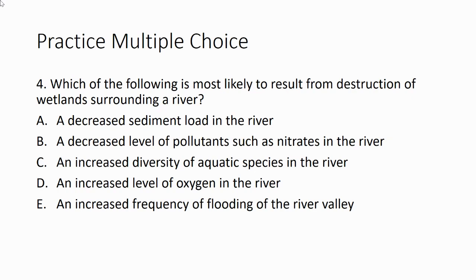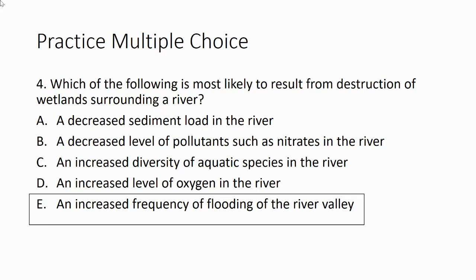If you want to pause the video at this point, see if you can answer our practice question: which of the following is most likely to result from the destruction of wetlands surrounding a river? The correct answer is E. If we saw destruction of a wetland surrounding a nearby river, we're probably going to see an increase in frequency of flooding in that river valley, because we know that as part of the services that wetlands provide, they help to provide flood control. All the vegetation that resides there helps to absorb the water and maintain the soil structure. Without that, we're going to see a lot of flooding.